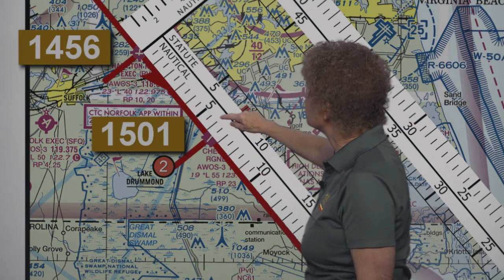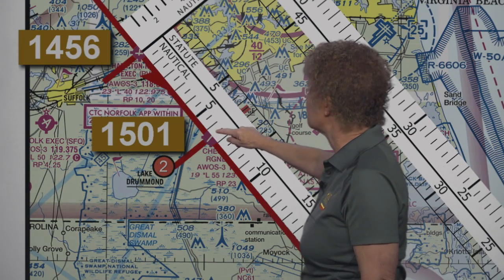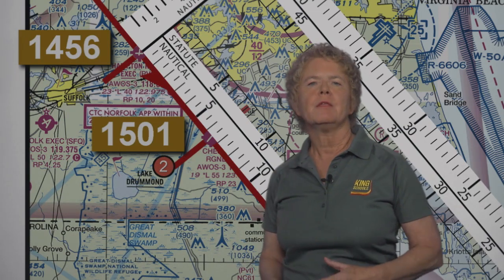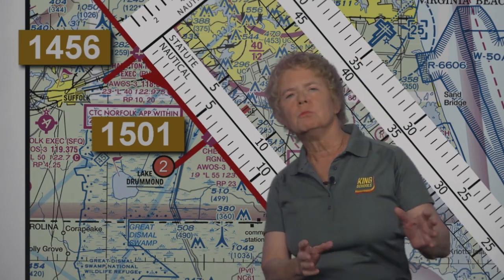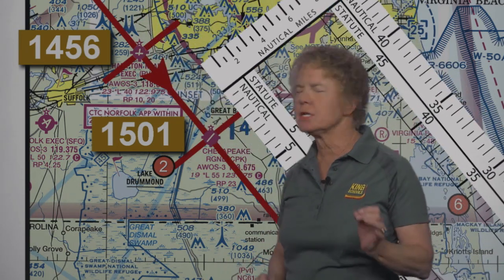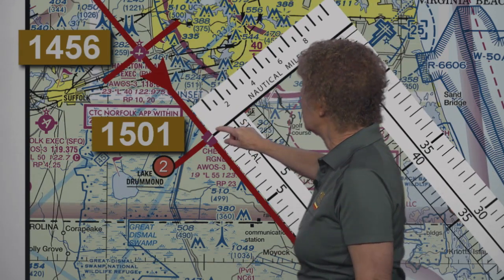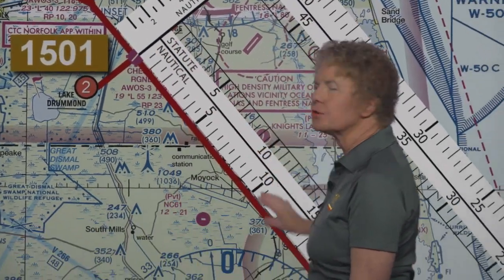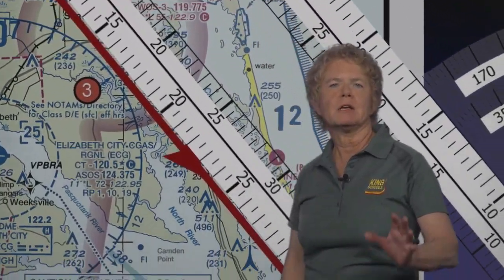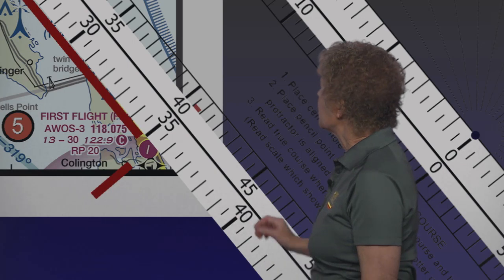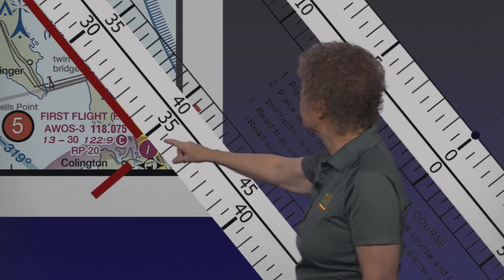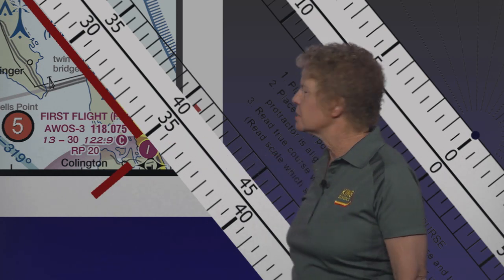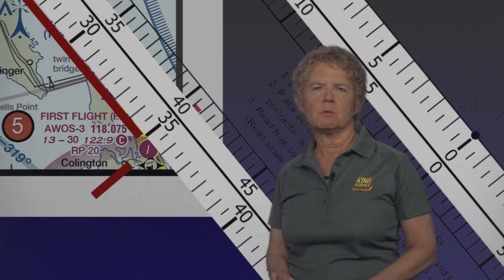Measuring from the center of Hampton Roads Airport down to the center of Chesapeake Airport, the distance is six and a half nautical miles — here's five miles, here's six miles, here's six and a half nautical miles. Now let's measure the remaining distance we've got to fly, from Chesapeake Regional Airport down to First Flight Airport. Move the plotter so the zero point is on Chesapeake Airport and take a look down at First Flight Airport. The distance on the plotter shows 35 and a half nautical miles remaining.